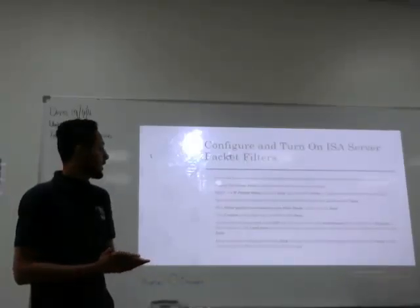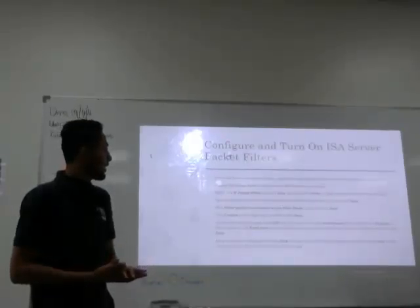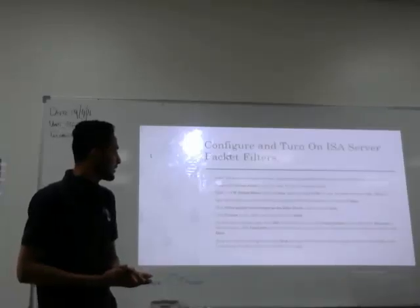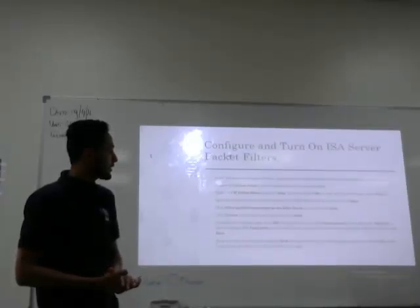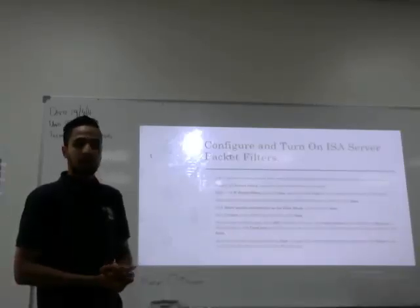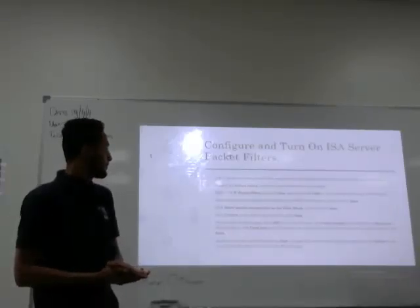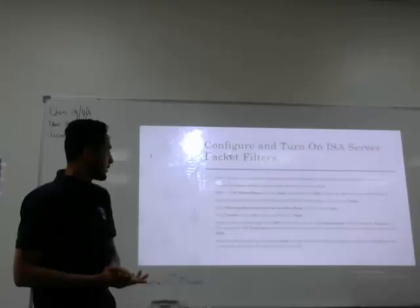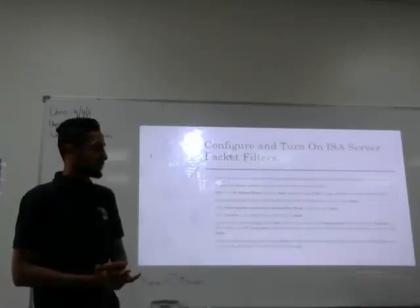Type a descriptive name for the filter, such as SMTP Allow Filter, and then click Next. Click Custom as the filter type and then click Next.